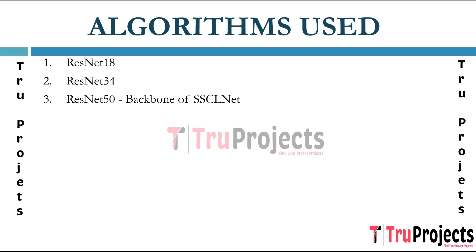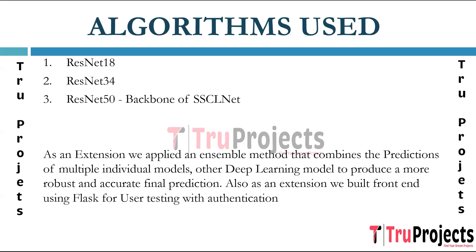The deep architectures of ResNet models are well suited for learning hierarchical features, which is crucial in tasks like image classification where objects have varying levels of abstraction. Pre-trained ResNet models on large datasets like ImageNet can be used as a starting point, enabling the project to leverage knowledge gained from a diverse dataset for improved feature extraction in the medical imaging domain. As an extension, an ensemble method is applied combining predictions of multiple individual models to produce a more robust and accurate final prediction, along with a Flask front-end with user authentication.